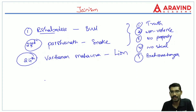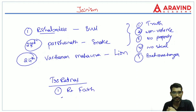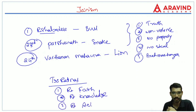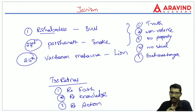According to Jainism, these five principles guide a moral life. The path to attain moksha follows three principles called Triratnas (three jewels): right faith, right knowledge, and right action. If one follows these three ratnas, anyone can attain moksha. These are the major tenets of Jainism.